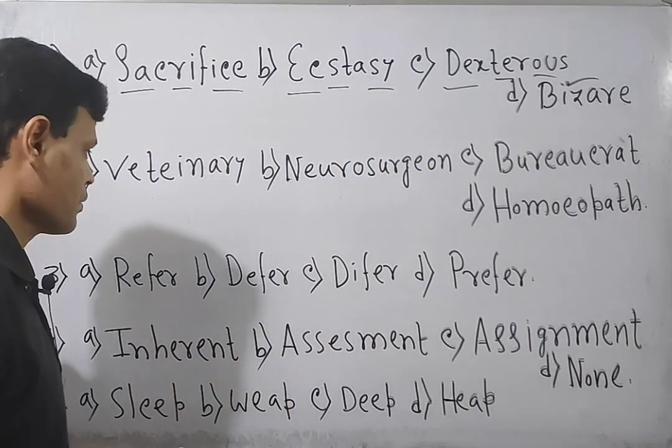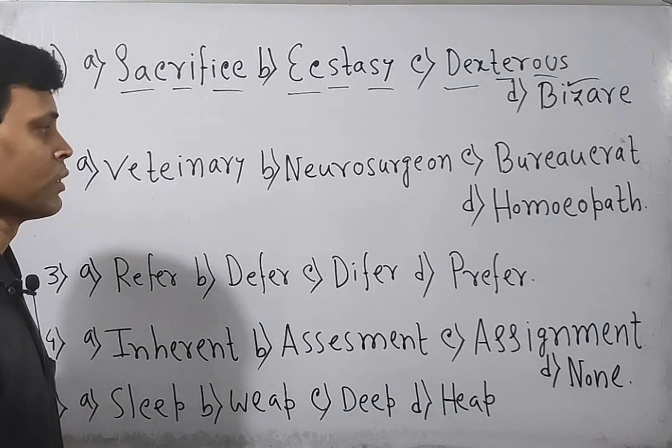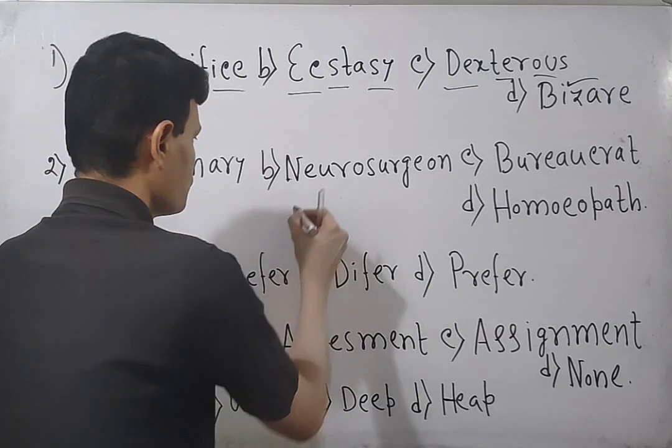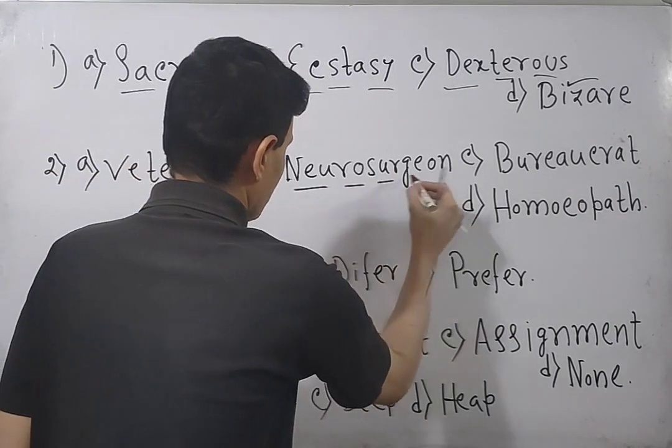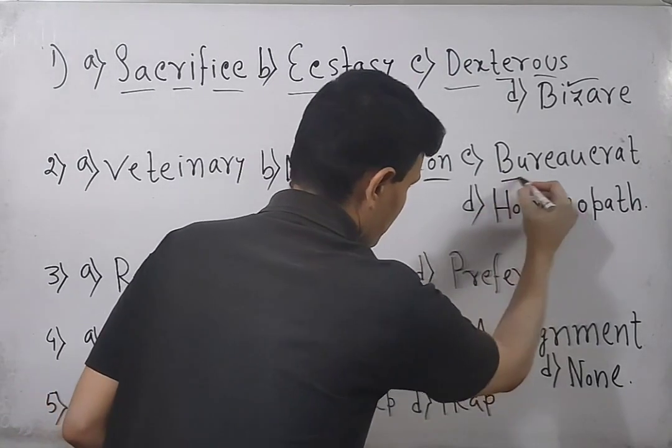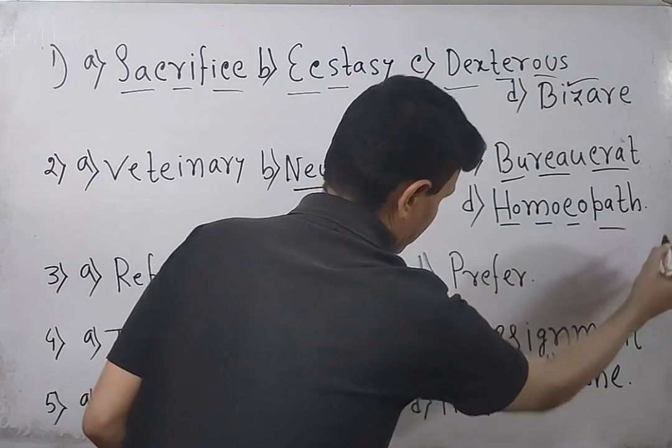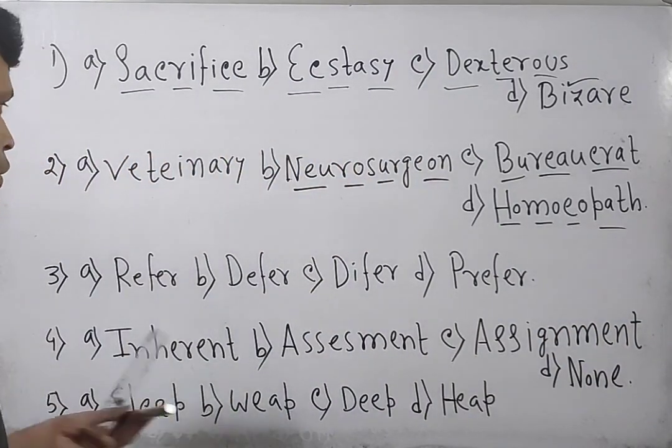V-E-T-E-I-N-A-R-Y. Neurosurgeon. Bureaucrat. Homoeopath. So out of the given options: V-E-T-E-N-A-R-E, Neurosurgeon, Bureaucrat, and Homoeopath.